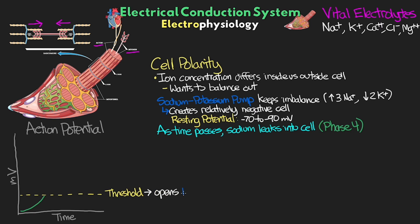The fast sodium channels are really a one-way channel that's going to allow sodium — a positive ion — to quickly enter into the cell, rapidly rising the charge of the cell and eventually matching the outside polarity, something that we call depolarization. This is what we consider phase 0 of the action potential, which you can see here with the sharp rise up.